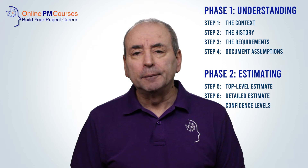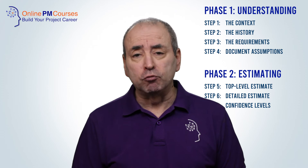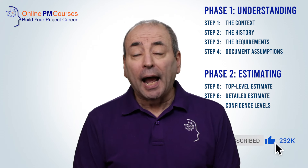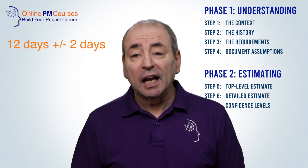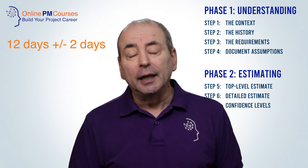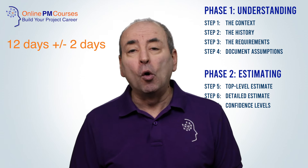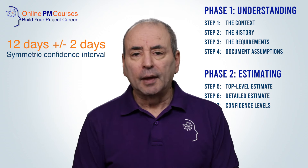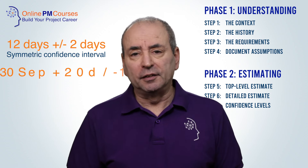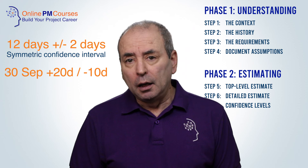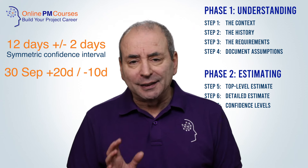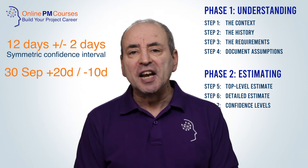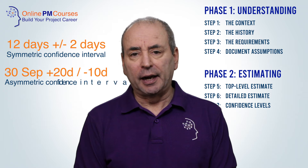We often express uncertainty or confidence as a range. A time estimate of 12 days plus or minus two days is an example of a symmetric estimate. A schedule estimate of 30th of September plus 20 days or minus 10 days is an example of an asymmetric estimate.